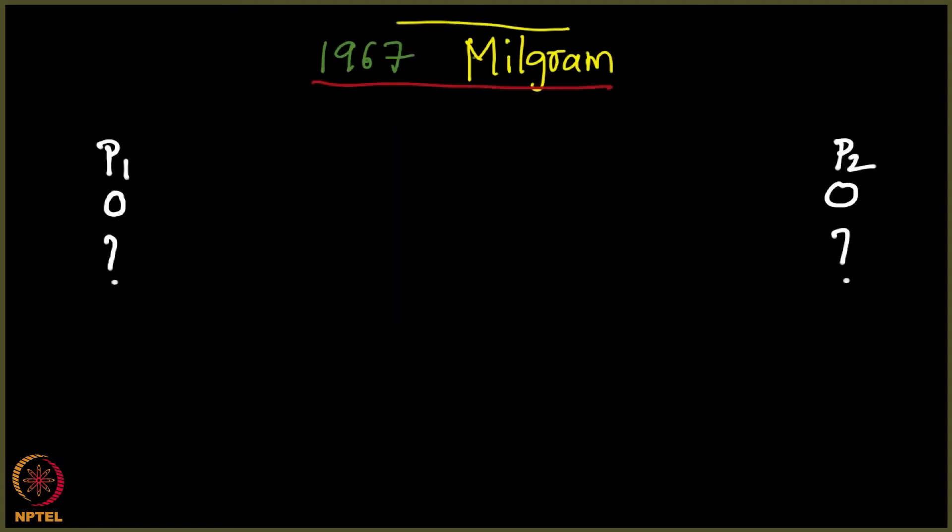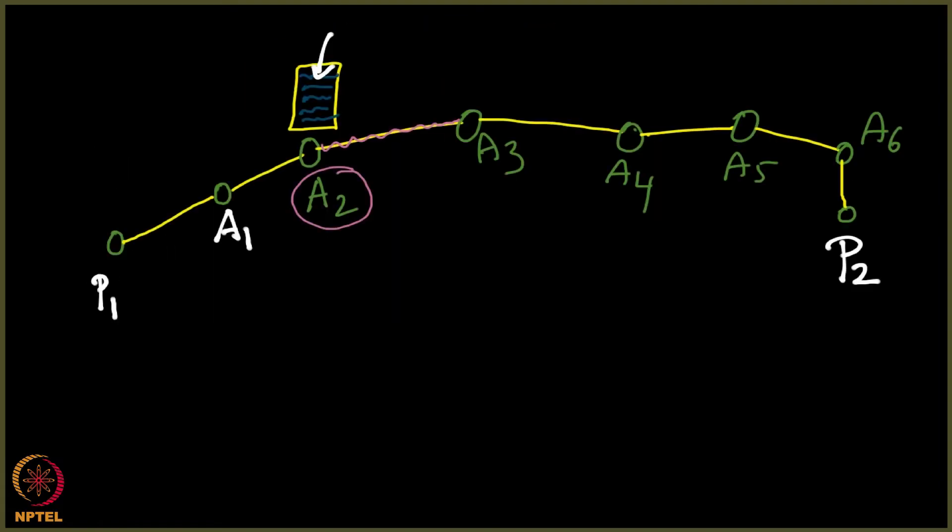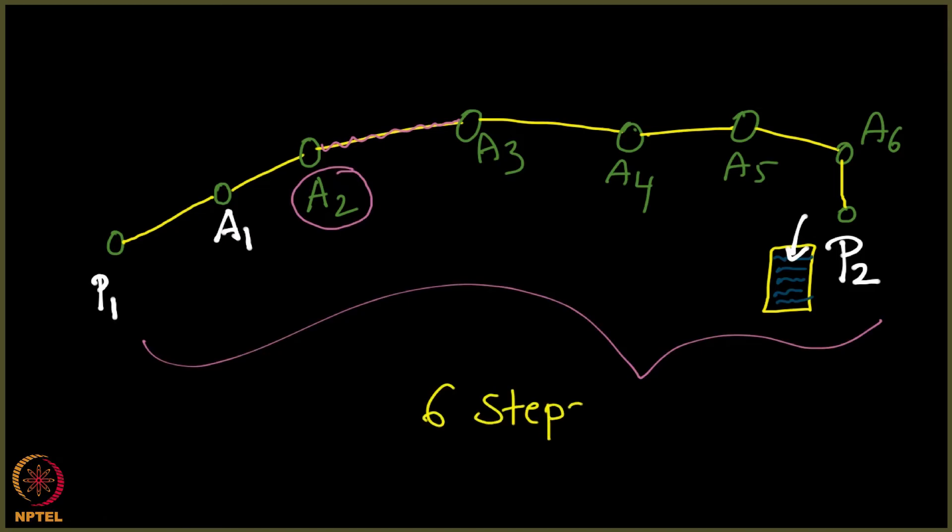Milgram observed that surprisingly, most of the letters that he sent started off with the source like this and then reached the destination. This entire thing happened in 6 steps on an average. I repeat, the 6 steps are on an average. Milgram observed this and published this article in a magazine called Psychology Today. This article did attract a whole lot of attention back then.